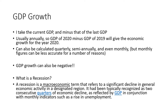GDP growth: I take the current GDP and minus that of the last year's GDP. Usually we do this annually, so GDP of 2020 minus GDP of 2019 gives us economic growth for 2020. It can also be calculated quarterly, semi-annually, or even monthly, but monthly figures can be less accurate because it takes time to collect all the information. GDP growth can also be negative — if I take the GDP of 2020 minus the GDP of 2019 and get a minus figure, that is negative growth.